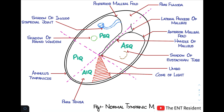First of all, we see over here this structure which is the handle of the malleus — this long handle of the malleus — and the tip of it right over here. The tip of the handle of the malleus forms a region which is known as the umbo. Because of this umbo, the tympanic membrane is slightly retracted at this level, and because of that you end up seeing the cone of light, which is right over here in the antero-inferior quadrant.